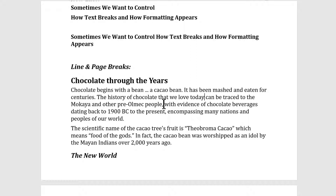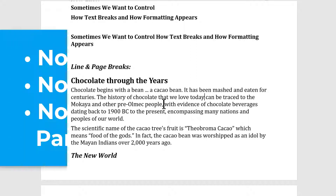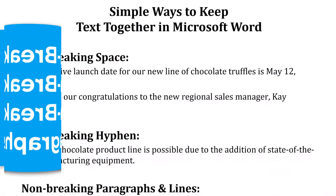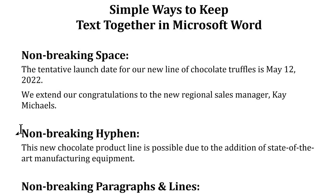Your options for keeping text together in Microsoft Word include non-breaking spaces, non-breaking hyphens, and non-breaking paragraphs and lines. Non-breaking spaces are ways to glue together content or text that we want to keep on the same line.